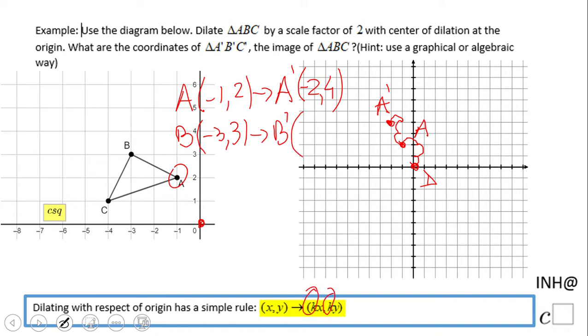So we have negative three times two, that is negative six, and then I have three times two, that will be positive six. These are the coordinates of B prime.